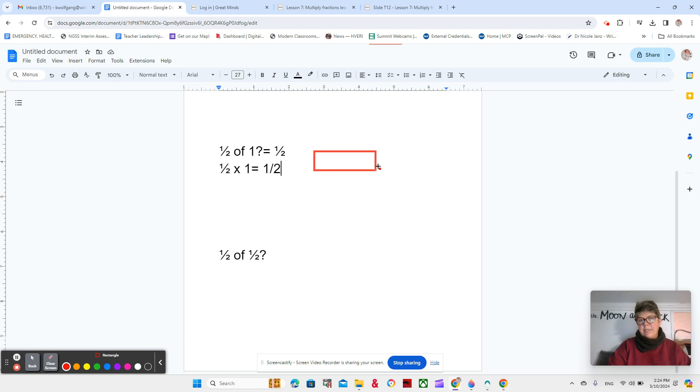Similar to the last problem. If we have 1 whole, and then we break it in half, 2 equal sections, each part is 1 half. Okay? Great. Now, we know that 1 half of 2, we know 1 half of 2, and we know 1 half of 1. Have you ever thought of 1 half of 1 half?